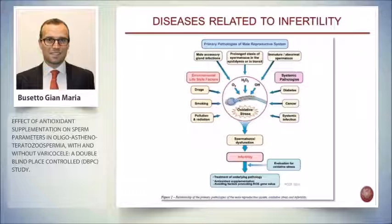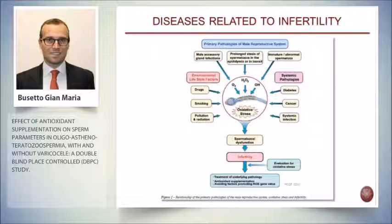What are the main causes of infertility? There are three different groups. The first is lifestyle — drug abuse, smoking, alcohol, and pollution are not good friends of fertility. On the other side, many pathologies like diabetes, hypertension, and cancer can also lead to infertility. The third major group is when there is a primary pathology of the male reproductive system, which is also a significant cause of infertility.